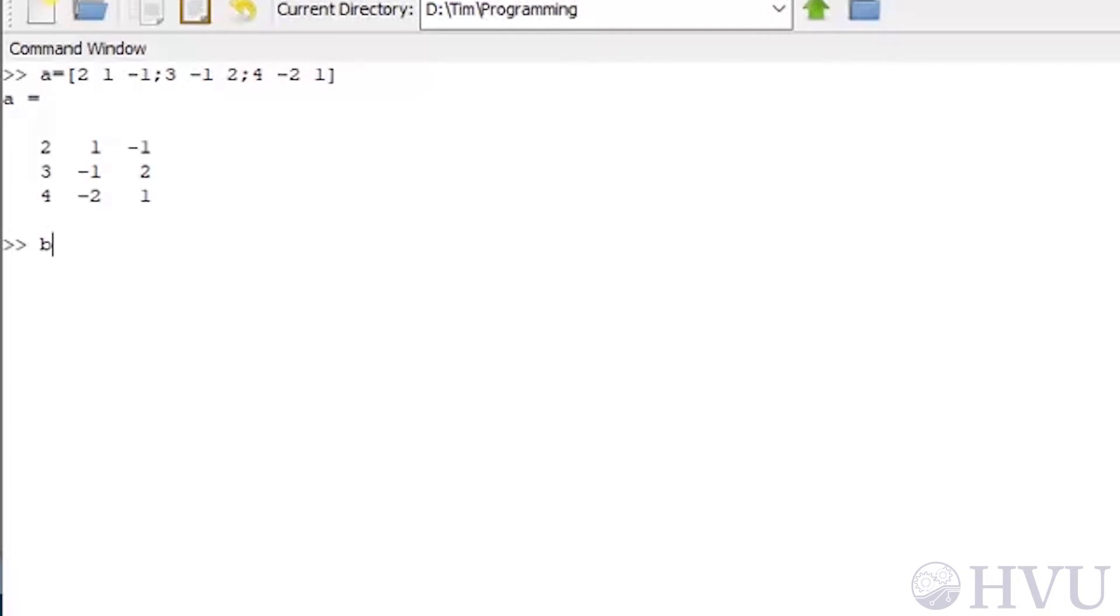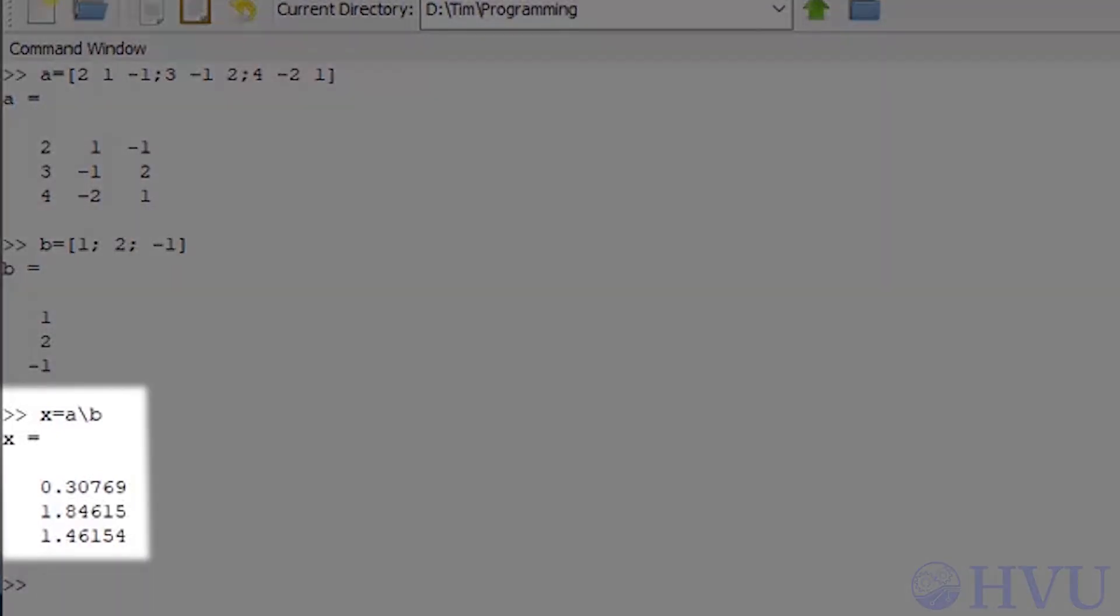And b is equal to 1, semicolon, 2, semicolon, negative 1. To solve the equations, I'll use the backslash operator. So, x is equal to a, backslash b. This is my solution from the original equations.